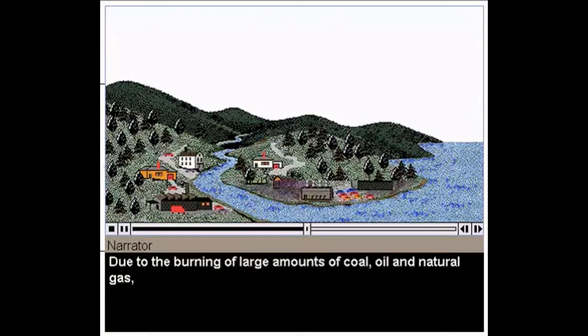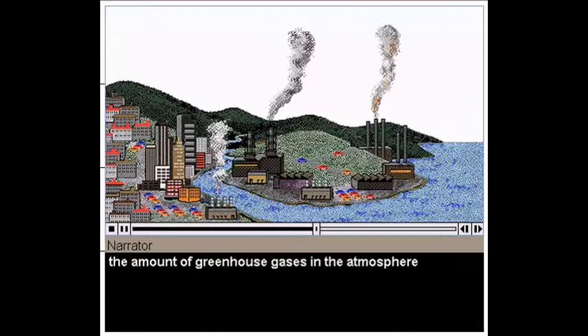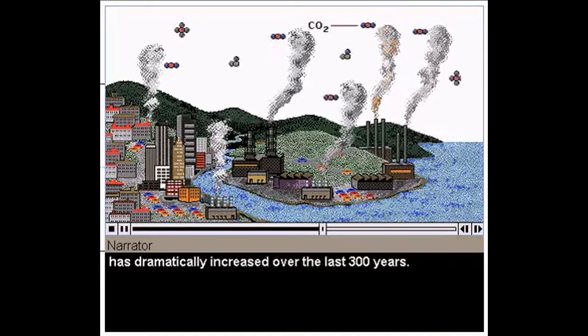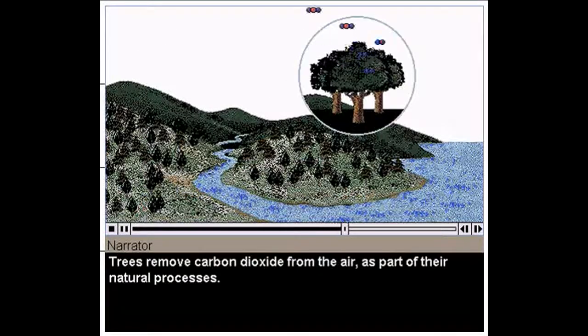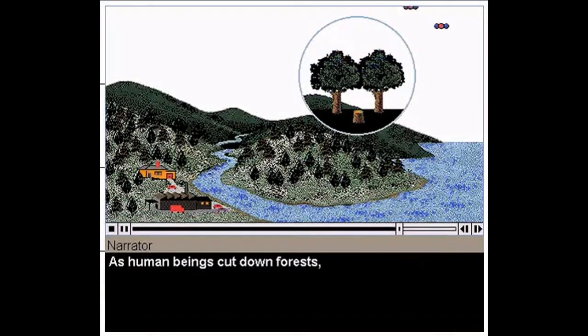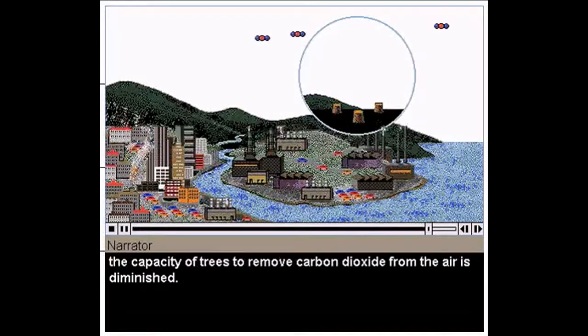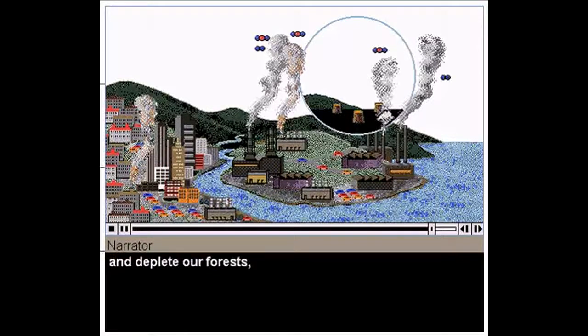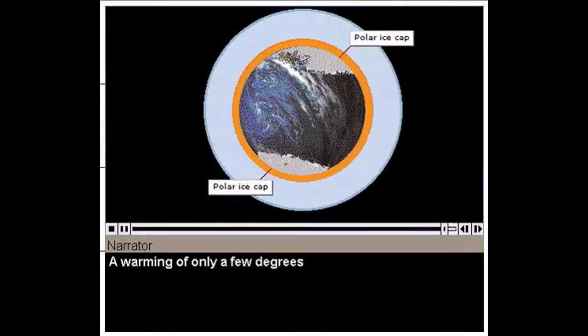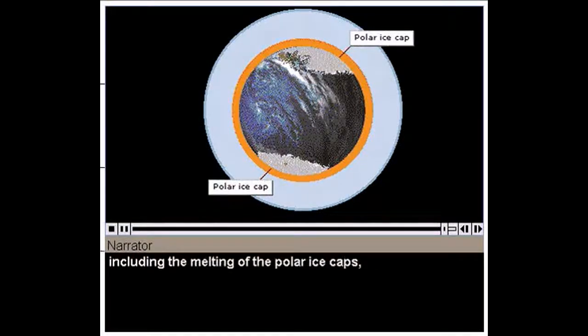Due to the burning of large amounts of coal, oil, and natural gas, the amount of greenhouse gases in the atmosphere has dramatically increased over the last 300 years. For instance, carbon dioxide, abbreviated as CO2, has increased 30% since 1750. Trees remove CO2 from the air as part of their natural processes. As human beings cut down forests, the capacity of trees to remove CO2 from the air is diminished. Scientists are concerned that as we continue to burn large amounts of fossil fuels and deplete our forests, an exaggerated greenhouse effect will occur, resulting in an increase in the world's surface temperature, known as global warming. A warming of only a few degrees could cause a number of environmental problems, including the melting of the polar ice caps, causing ocean levels to rise and flooding coastal areas.